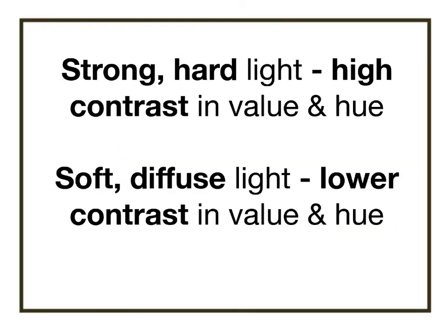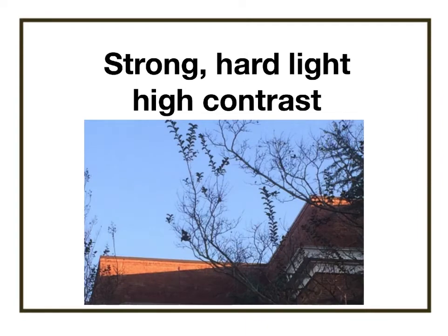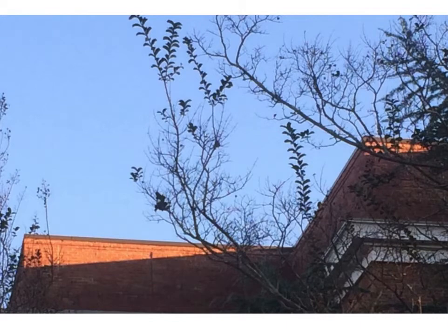To create a strong, hard light, you're going to use high contrast, and to create a sense of soft, diffused light, you're going to use a lower contrast in value and hue. In this photograph from the last video, you can see that warm, strong light falling on the building. It has a strong, hard light, and you can see how high the contrast is in value on that building — that's what gives it that strong sense of illumination.